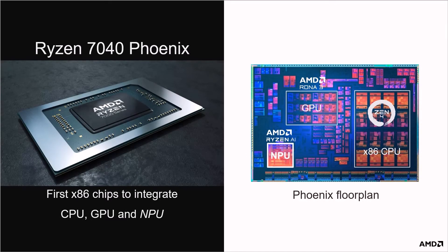The AMD Ryzen 7000 Phoenix family is the first generation of AMD processors to integrate an NPU. The floor plan shows an x86 CPU, a GPU and the new Ryzen AI NPU all integrated in the same chip. A second generation and third generation of Ryzen AI NPU will be available in new AMD processors in 2024.